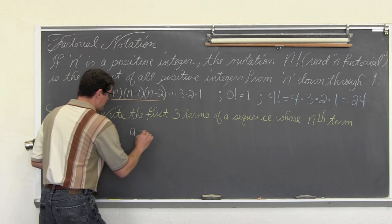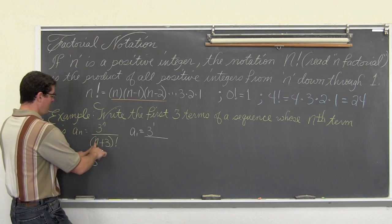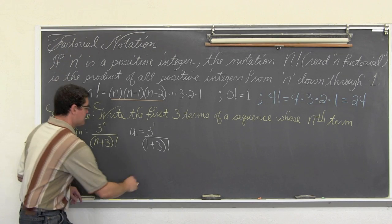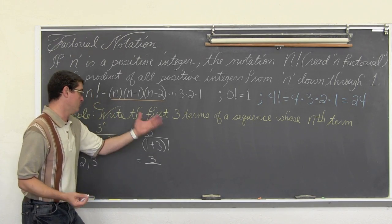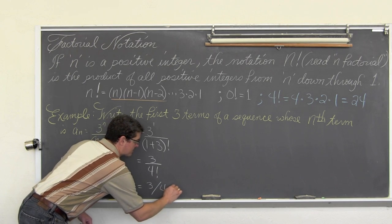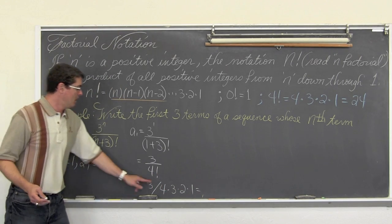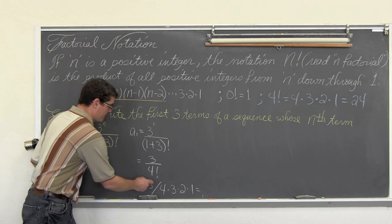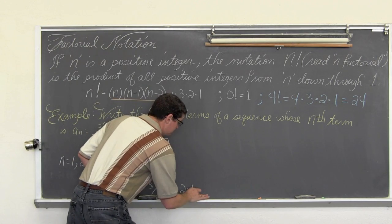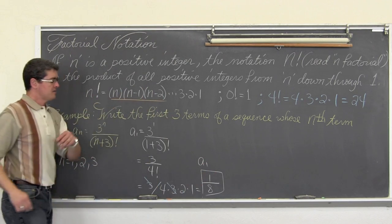So a sub one is going to be equal to three to the first power over one plus three factorial. That is going to be equal to three over four factorial, which is three over four times three times two times one. We have a three on top and a three in the denominator, so that reduces, leaving us with one over four times two, which is equal to eight. So a sub one has a value of one eighth.